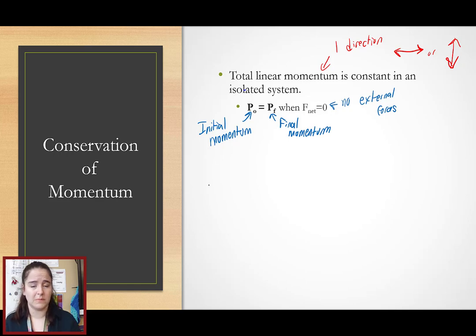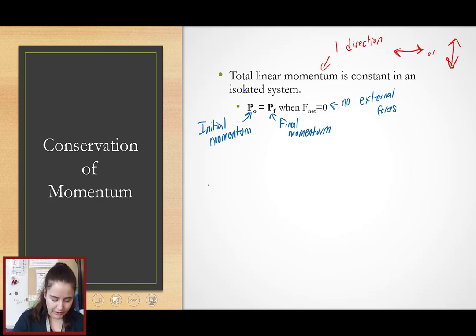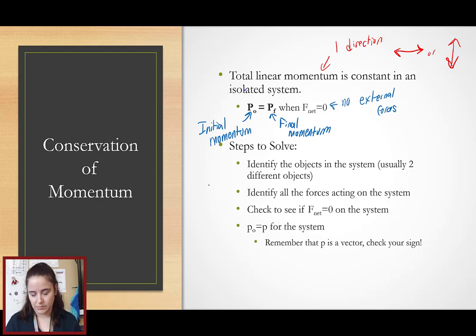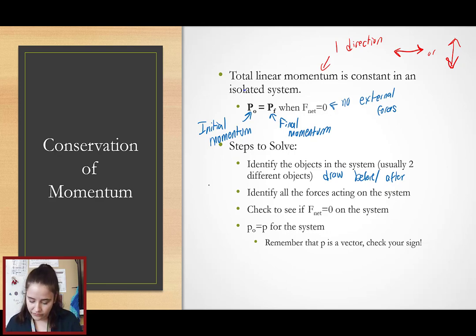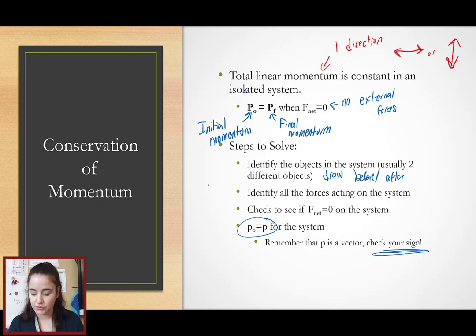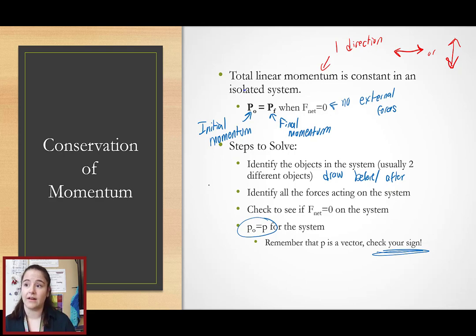Now, you can imagine in these types of problems, because we're going to be working with two different objects in both a before and after collision, they can get pretty complex. So anytime we're doing these problems, we're really going to use our five-step solution. We need to identify the objects in the system, and typically I'll have you draw a before and after picture with all of the labels. Then, as soon as we're sure that there are no outside forces — that F-net is zero — we can use the conservation of momentum. But don't forget to check your sign. Momentum is a vector; it has a direction. So we need to make sure that all one direction is positive and the other direction is negative.